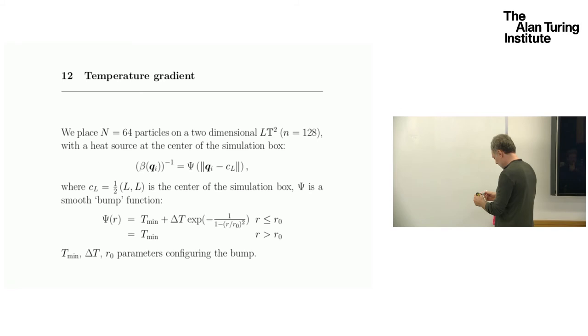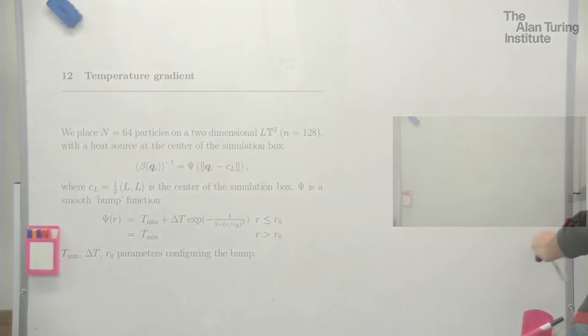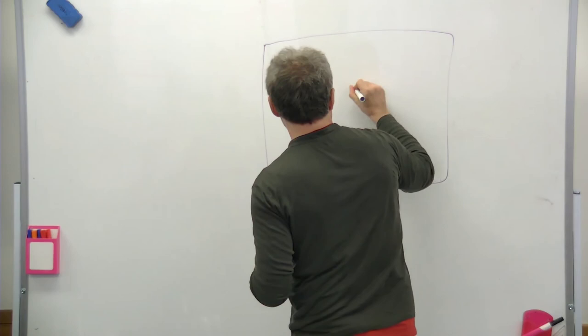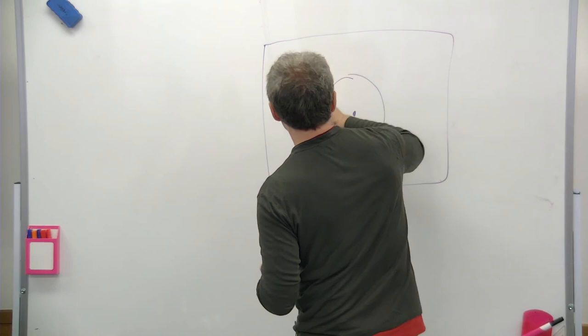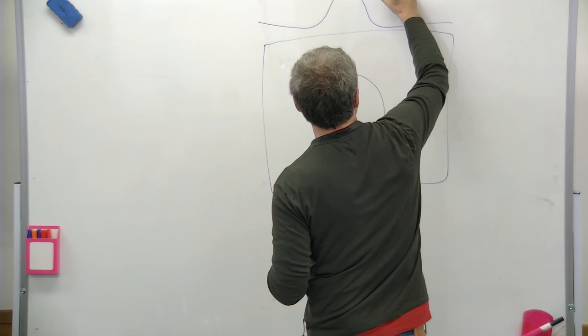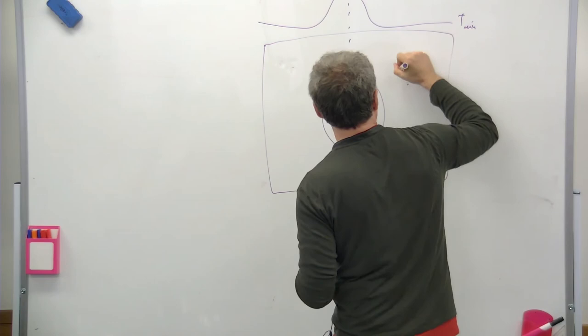We have this box, which is periodical. Here, we have some kind of radially symmetric source of heat. And here, we have some kind of profile of temperature, which is like this. T max. And this is T min. And we throw our little particles.